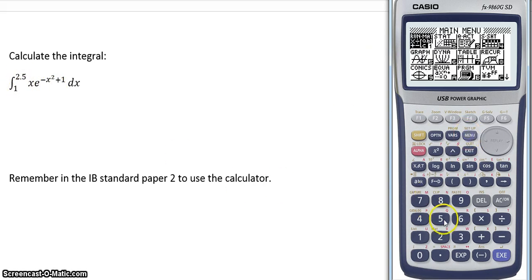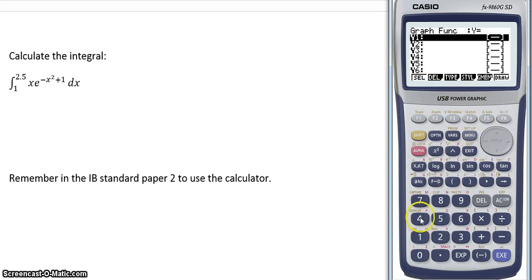We go to the graph menu to see what is going on. And we are going to input the function. We need a bracket there because all that is an exponent. So we do it like that, plus 1, and we close the bracket and we graph it.